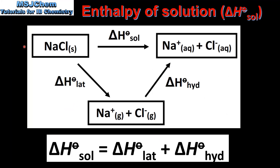In this slide we look at an energy cycle that can be used to calculate the enthalpy change of solution. According to this energy cycle, there are two ways to go from one mole of solid sodium chloride to one mole of aqueous sodium ions and one mole of aqueous chloride ions. The direct route is the enthalpy change of solution. The indirect route starts with the lattice enthalpy to produce gaseous ions, which are then hydrated to give the aqueous ions. Applying Hess's law, the enthalpy change of solution equals the lattice enthalpy plus the sum of the enthalpy of hydration values of the gaseous ions.